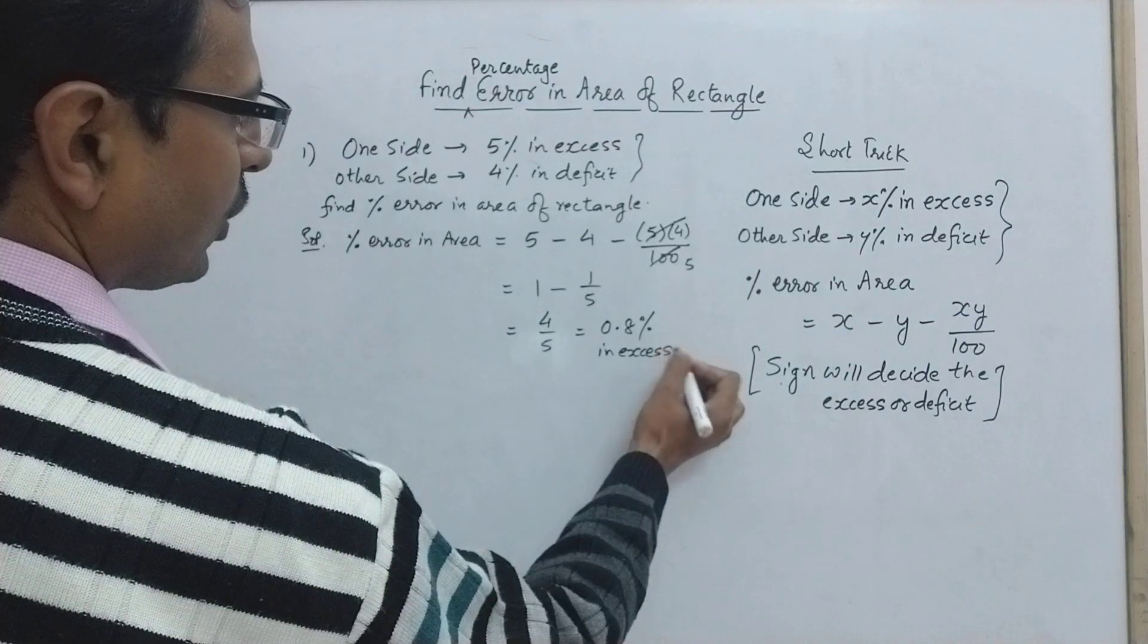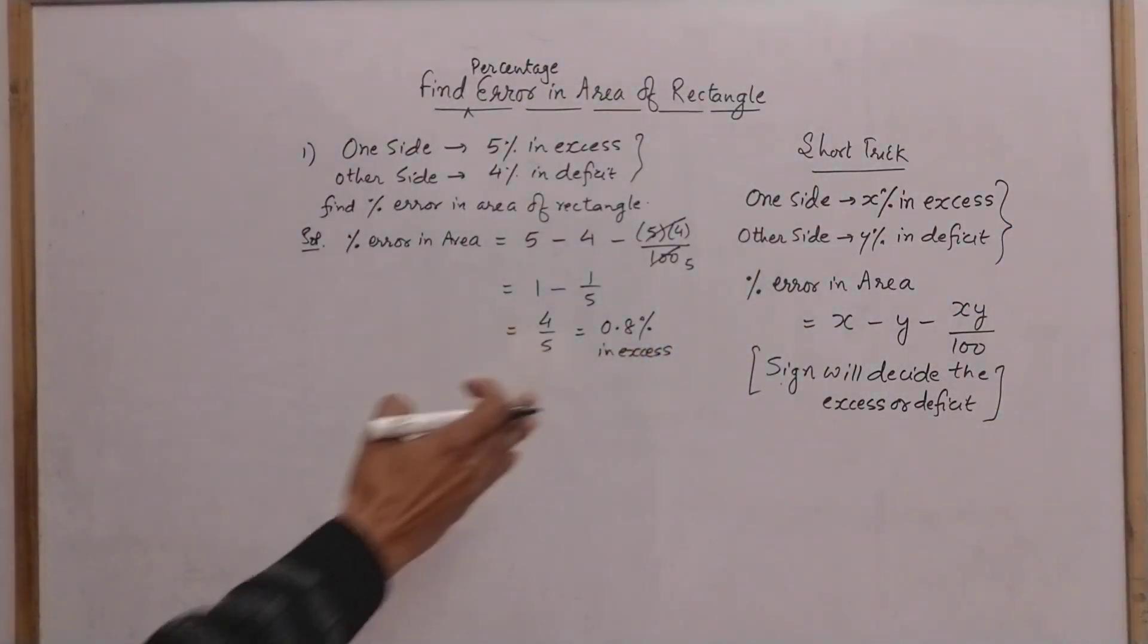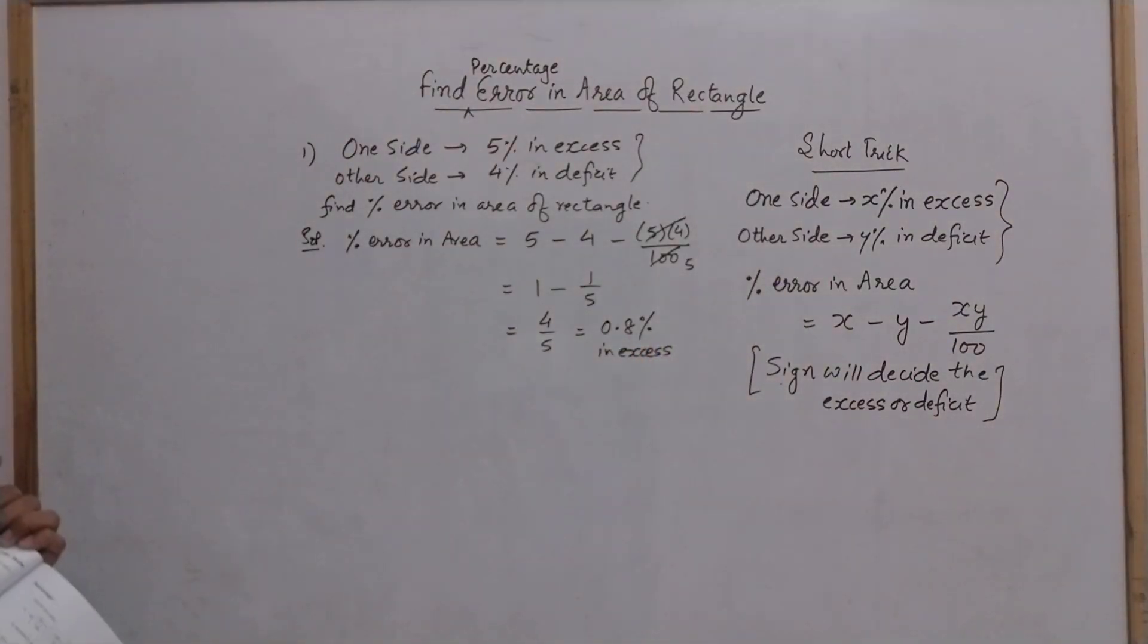That means 0.8 percent in excess. That means the overall area will be 0.8 percent more than what it would have been when the actual sides were taken.